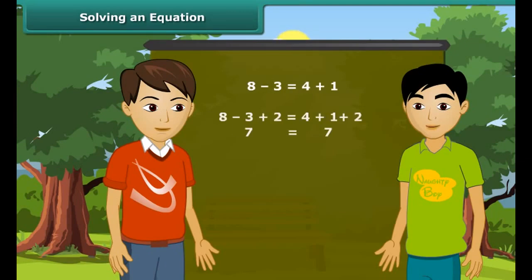Similarly, if we remove the same weights from both the pans, the arm remains horizontal. Same is the case with the equation. If we add the same number to both sides, the equation remains unchanged. And if we subtract the same number from both sides, the equation remains unchanged. If we multiply or divide by the same number, then also the equation remains unchanged.